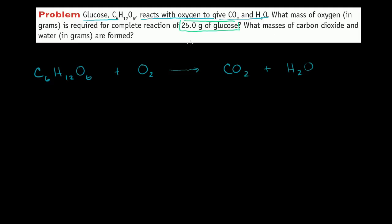You might already recognize this — this is a stoichiometry problem. We have 25 grams of glucose. How much oxygen is required to completely react with that glucose, and how much carbon dioxide and water is going to be produced in grams? That's what stoichiometry problems are all about. And if you remember from the last video, the first thing you should always do is make sure that your equation is balanced.